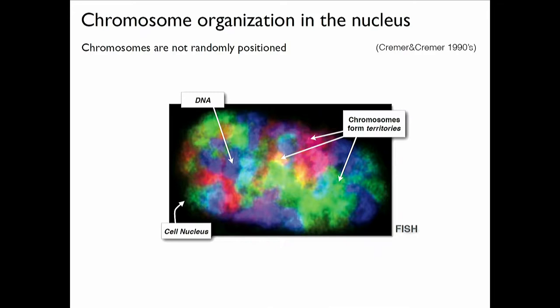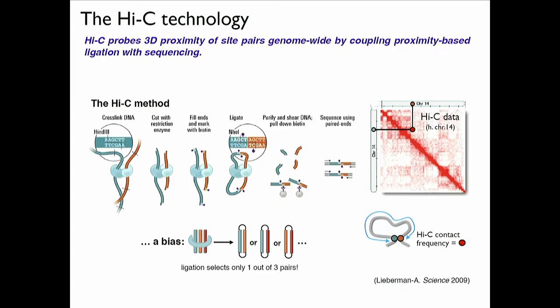That has been addressed in a real major step forward in the field by Job Decker, roughly 10 years ago, when he envisaged the Hi-C technology. The idea behind Hi-C is very, very nice and very simple. We want to measure who's contacting whom, genome-wide.